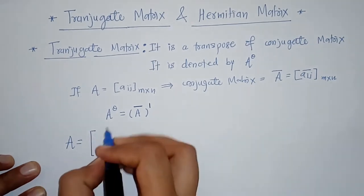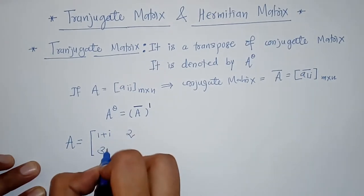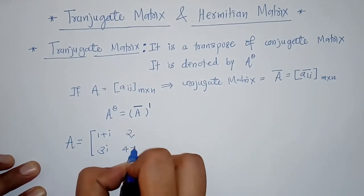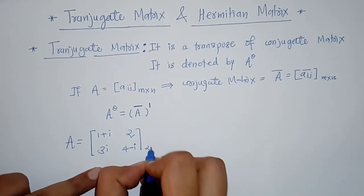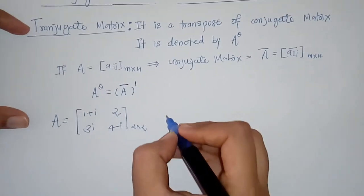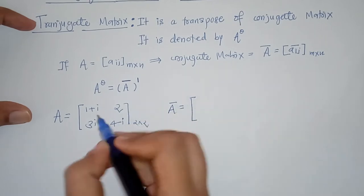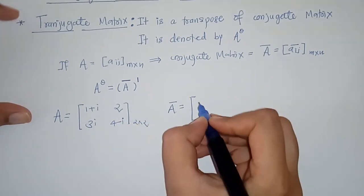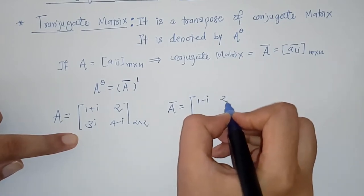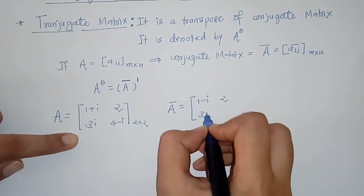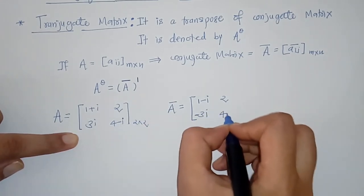Let's take an example. If we have matrix A with first row: 1+i, 2, and second row: 3i, 4−i, this is a 2×2 matrix of complex numbers. To find the conjugate matrix, we replace all elements by their conjugates: 1+i becomes 1−i, 2 stays 2, 3i becomes −3i, and 4−i becomes 4+i.